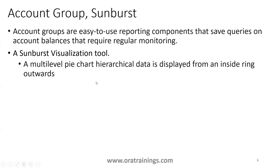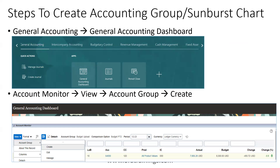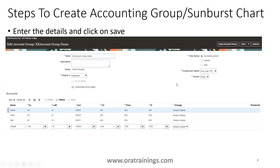The Sunburst is a multi-level pie chart — similar to a pie chart but with multi-level circle information. The steps to create an account group are: navigate to General Accounting, click on the General Accounting Dashboard, then under Account Monitor click View Account Group, click Create, and then fill in the details — name, display in receivables or expenses, time option, accounting period, quarter or year comparison, prior year or actual year, PTD or YTD, and the relevant account details — then click Save and Close.